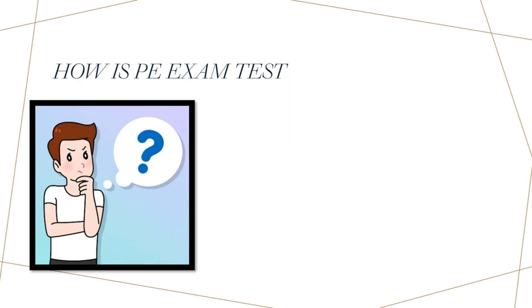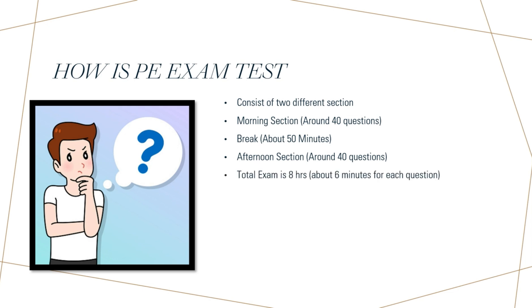How is the PE exam tested and what do you expect at the date of your exam? The new exam consists of two different sections. We have a morning section, which is around 40 questions. Then you have 15 minutes of breaks, and then you will start your afternoon section, which is around 40 questions again. The 40 questions is just the average. It can be 38-42 or 39-41 or 40-40, but the average is 40-40 for each section. You have around eight hours for the exam, which means that you have about six minutes to answer each question.